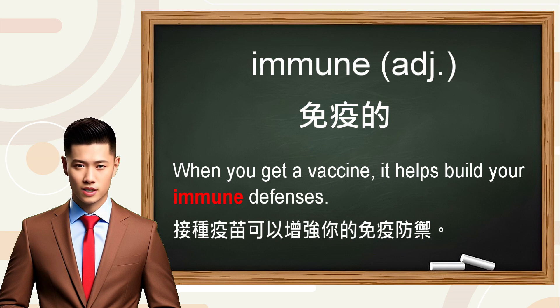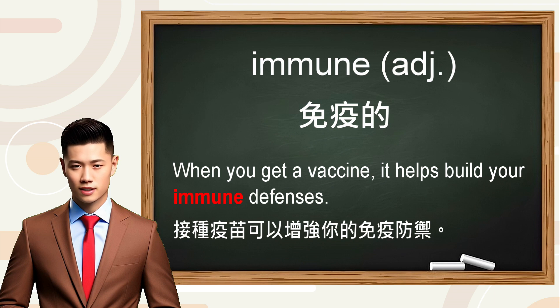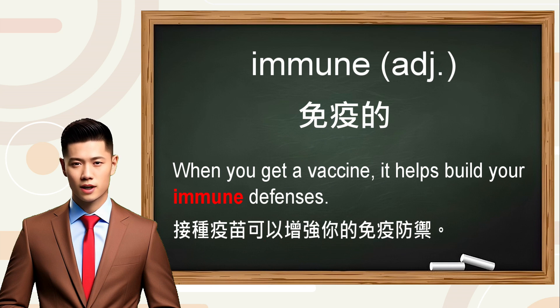Immune，这个单字的意思是免疫的，指身体免疫系统抵抗疾病的，作为名词是immunity。例如：When you get a vaccine, it helps build your immune defenses.（接种疫苗可以增强你的免疫防御。）